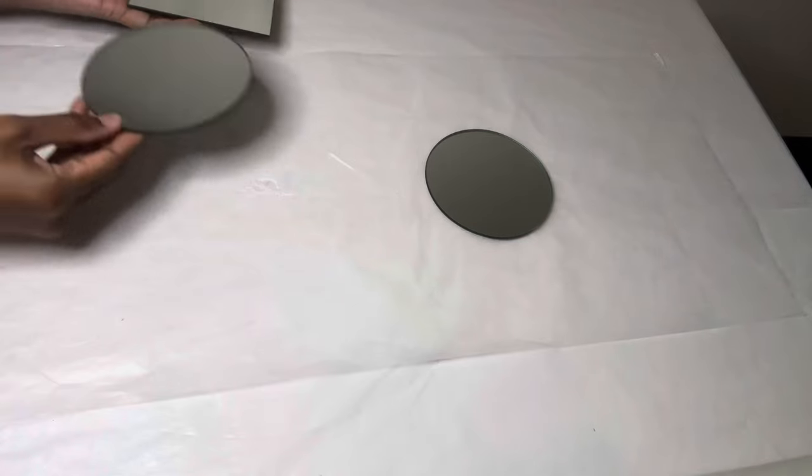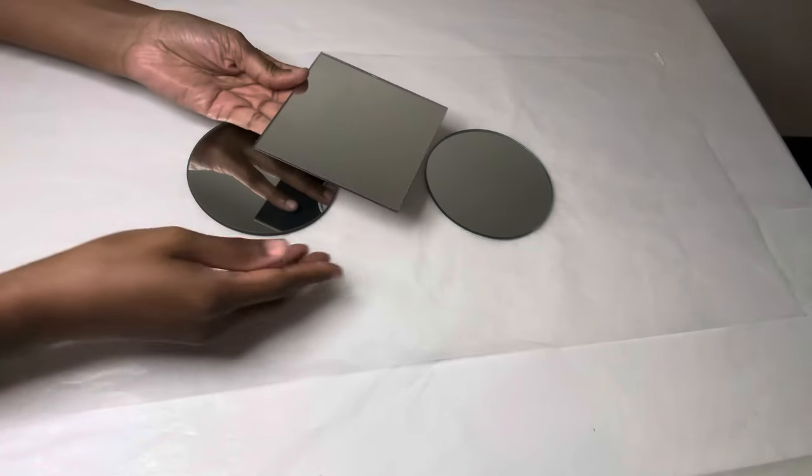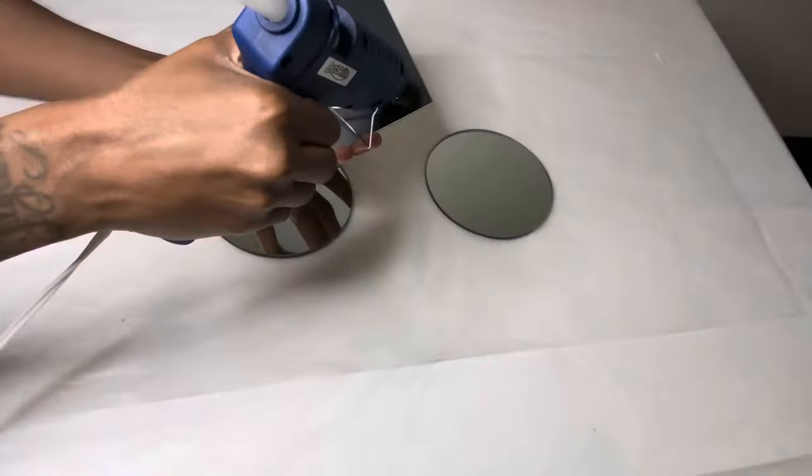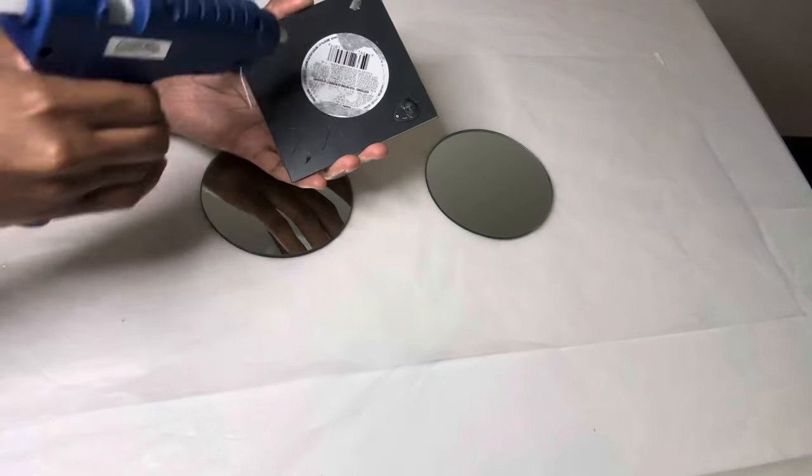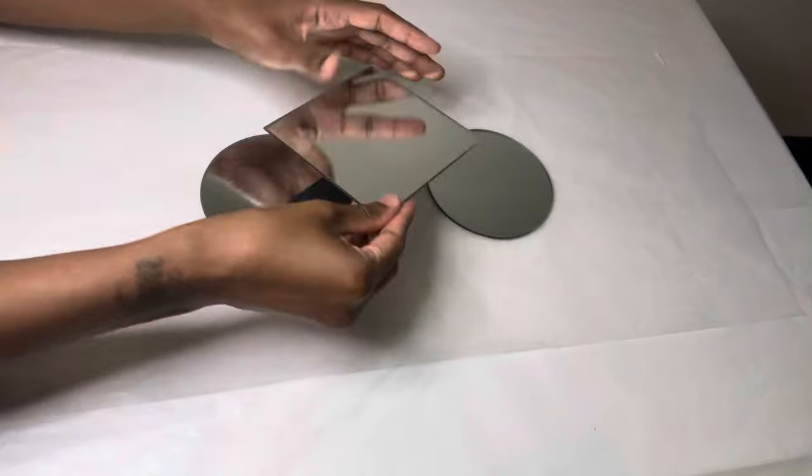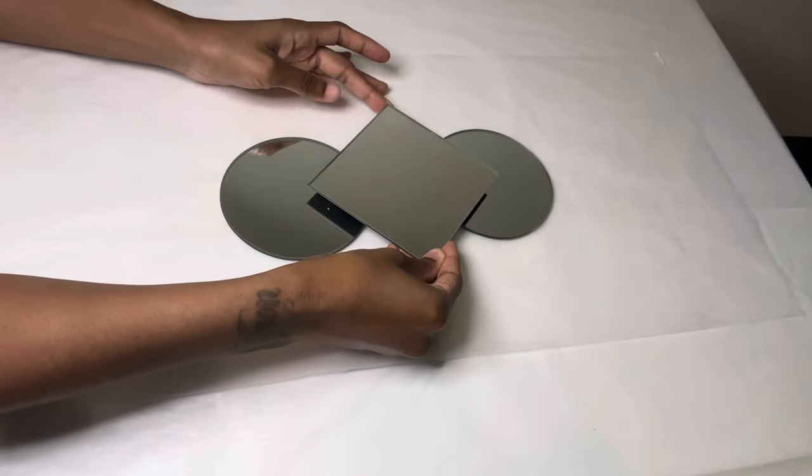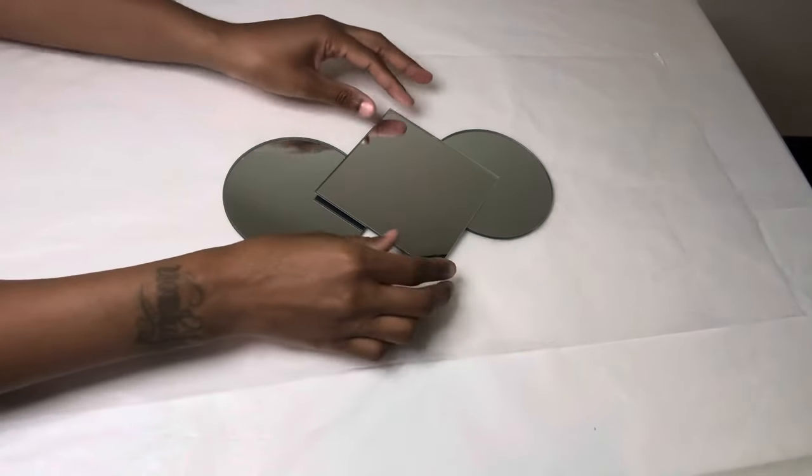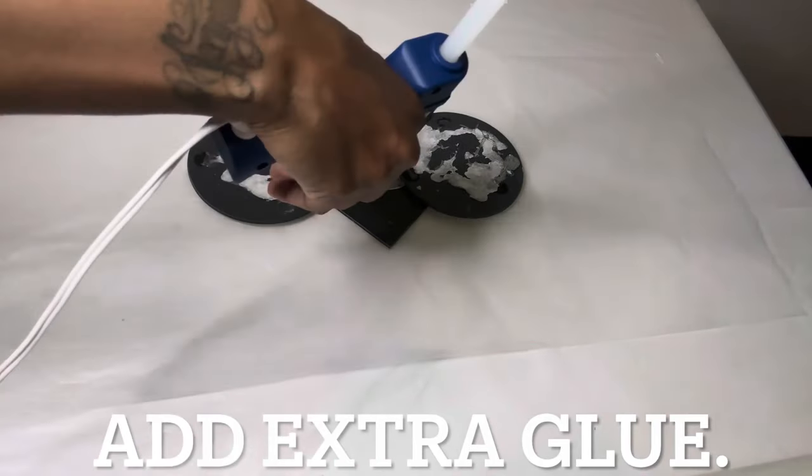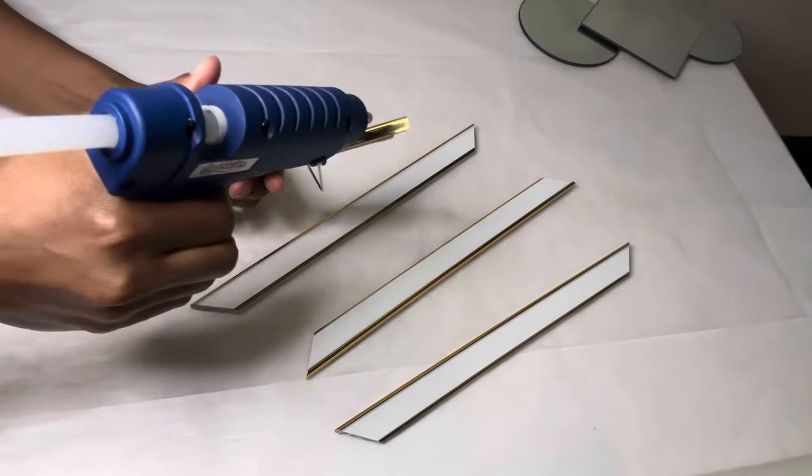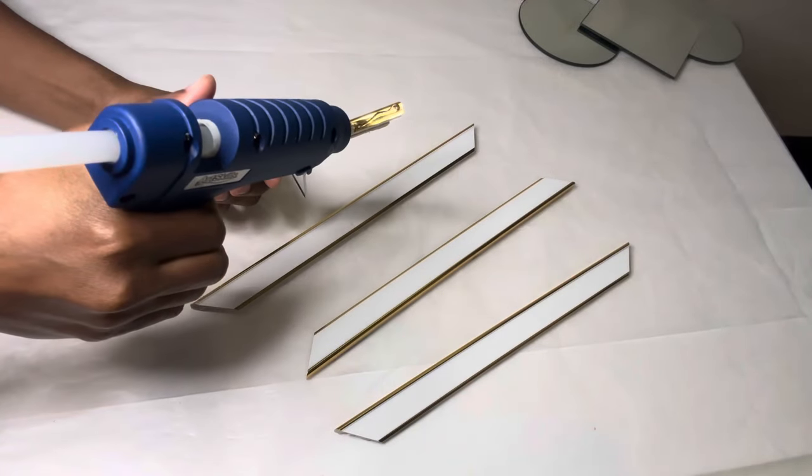On to project number two. All I'm doing is combining all three of these mirrors. Now I'm combining my picture frames, making a letter X.